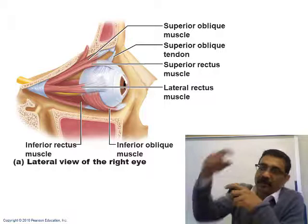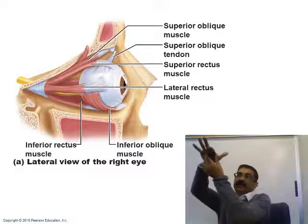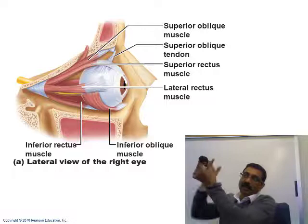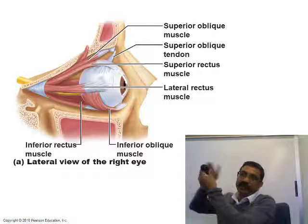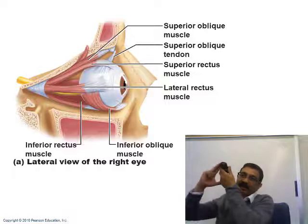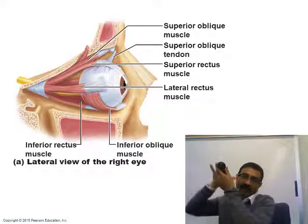There are also two oblique muscles. If this is your eyeball, the four rectus muscles are arranged around it: one above — the superior rectus, one below — the inferior rectus, one on the lateral side — the lateral rectus, and one on the medial side — the medial rectus. The two obliques go diagonally, like this.